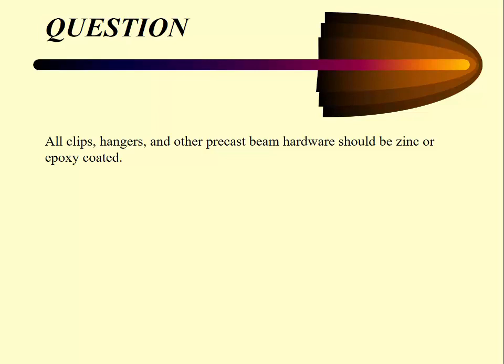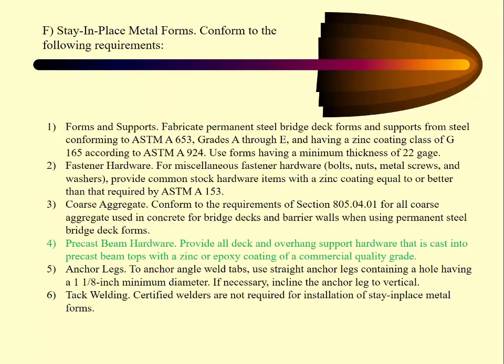Question: all clips, hangers, and other precast beam hardware should be zinc or epoxy coated — true or false? That is true. Per specification 601-02-13F, paragraph 4, precast beam hardware needs to be zinc or epoxy coated. More or less, just like everything in our deck, it's got to be zinced or epoxied. Zinc is another term for galvanization.